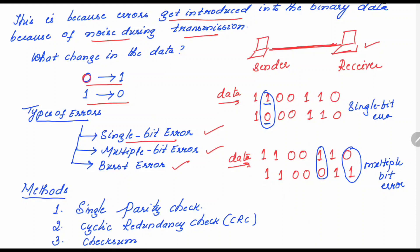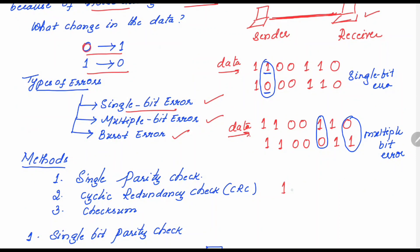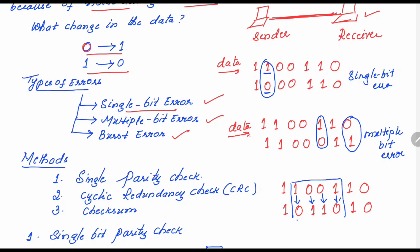There is one more type of error called burst error. For example, suppose the data sent is 1 1 0 0 1 1 0. At the receiver side, consecutive bits got changed — the receiver may receive 1 0 1 1 0 1 0. Four bits got changed here, but we cannot call this a multiple bit error even though more than one bit changed, because the bits that changed are consecutive. If consecutive bits get changed, we call that a burst error.